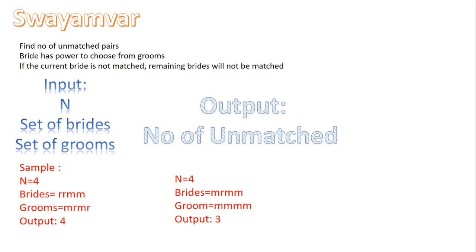Now as the question says it is a Swayambar, the power lies within the girl to choose a boy or not. Even within the girls, the highest power lies with the first girl. If the first girl finds her choice of groom, she will allow the next girl to choose her groom. Similarly, if the second girl finds a groom of her choice, she will allow the third girl to choose, and so on. If the third girl did not find her choice of groom, she will not allow the next girl to choose.